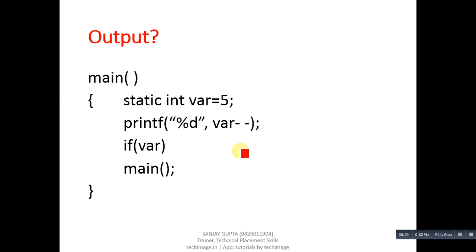So first code segment, you have to identify its output. It has a static variable, then printf, then if condition. Inside if we are calling main. If we define a function and call that function inside its definition, it is called recursion. This is a recursive method. First, find out its output.